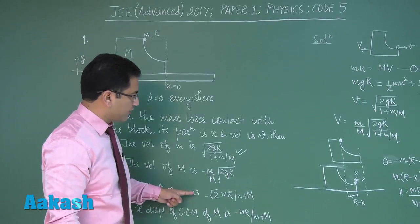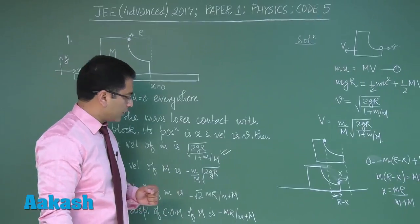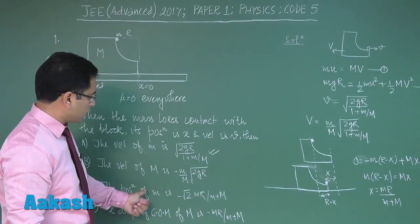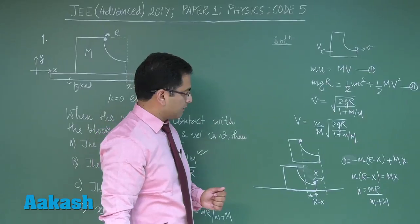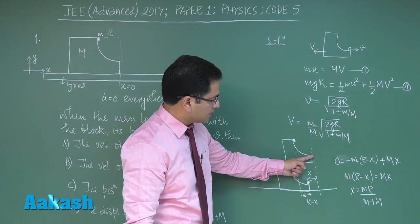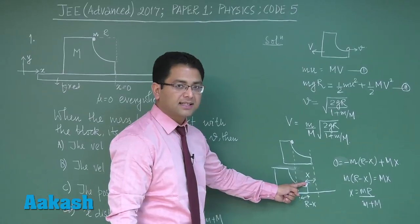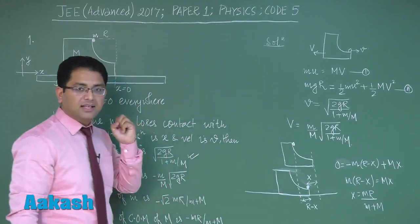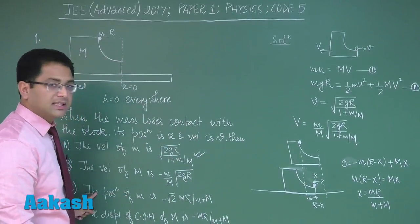Well option number C would straightaway be incorrect because now you could easily see the position of small m is, the position of the small m is this and this was the origin so that would also be minus X. So that's straightaway very easy to conclude the option number C would be incorrect.